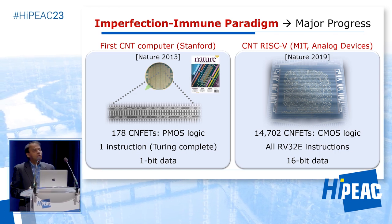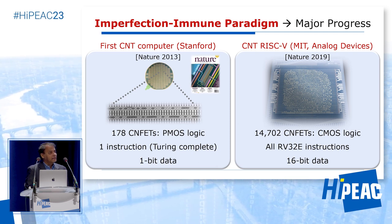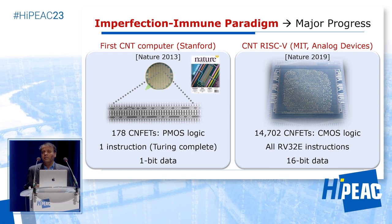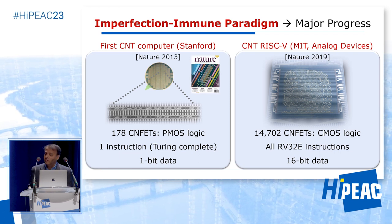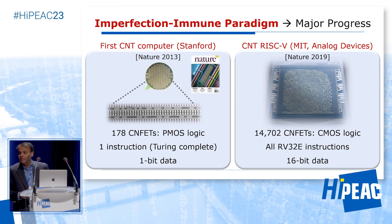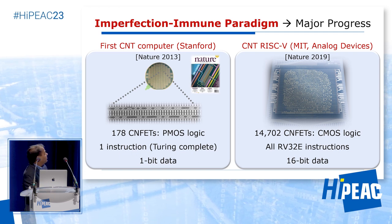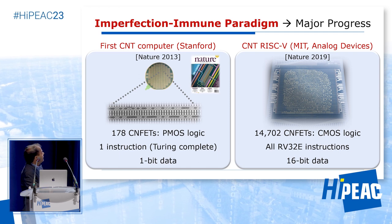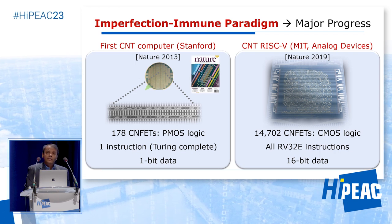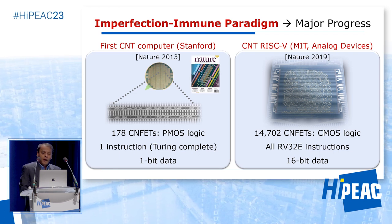If carbon nanotubes are so good, how come we don't have them inside your cell phones? For a very long time it was very difficult to build functioning circuits out of carbon nanotubes because of imperfections inherent in these nanotechnologies. But the good news is that at Stanford over the past decade, we worked on what is called an imperfection immune paradigm that overcomes these challenges. As a result, we were very fortunate to be featured on the cover of Nature, where we demonstrated the first carbon nanotube computer. And even better news is that folks from MIT and Analog Devices in 2019 demonstrated a full RISC-V microprocessor, which was far more capable than our basic carbon nanotube computer.